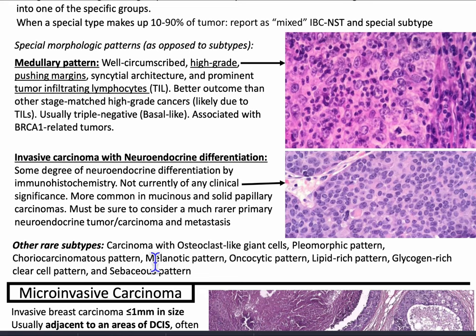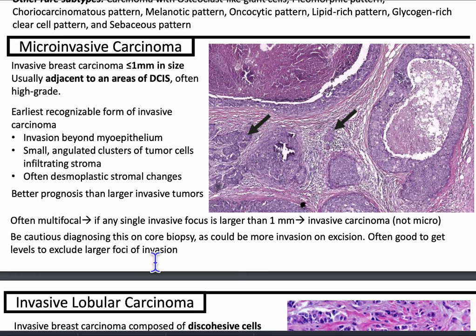Microinvasive carcinoma is an invasive breast carcinoma that's less than or equal to one millimeter in size, usually adjacent to an area of DCIS, often high-grade. It's the earliest recognizable form of invasive carcinoma — invasion beyond the myoepithelium — with small angulated clusters of tumor cells infiltrating the stroma with often desmoplastic stromal changes. It has a better prognosis than larger invasive tumors and is often multifocal. If any single invasive focus is larger than one millimeter, it's invasive carcinoma, not microinvasive carcinoma. Be cautious when diagnosing this on core biopsy, as there could be more invasion on excision. It's often a great idea to get levels to exclude larger foci of invasion.